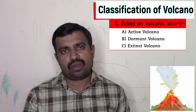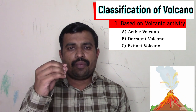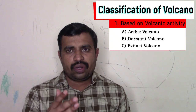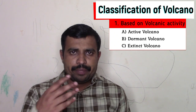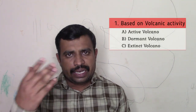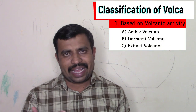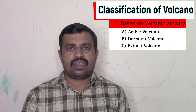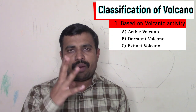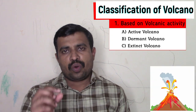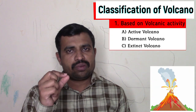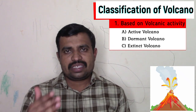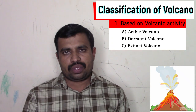The best example of an active volcano is Stromboli, which is very well known. Some volcanoes emit lava after an interval of one, two, or three years, and such volcanoes are also called active volcanoes. When we look at the globe, more than 300 active volcanoes are present on the earth.